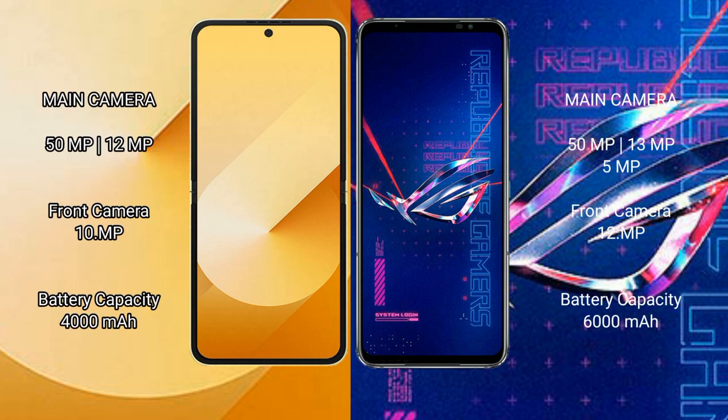The Samsung Galaxy Z Flip 6 has a rear dual camera setup with 50 megapixels plus 12 megapixels, and a 29-megapixel front camera. The Asus ROG Phone 6 Pro has a rear dual camera setup with 50 megapixels plus 13 megapixels plus 5 megapixels, and a 12-megapixel front camera.